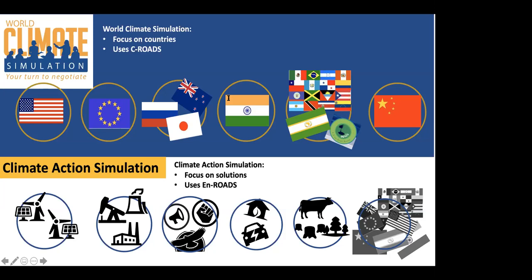In this world climate simulation, participants have the opportunity to discuss regional contributions to climate change, past and future. The climate action simulation divides participants by stakeholder groups — no longer regions or countries, but groups like conventional energy supply, renewable energy, and land use and agriculture. The model behind that simulation is En-ROADS, which builds upon the climate structures of C-ROADS but has additional energy structures. The real focus of the climate action simulation is on solutions to climate change. Yasmeen will now talk about the logistics of world climate and how it translates to an online experience.